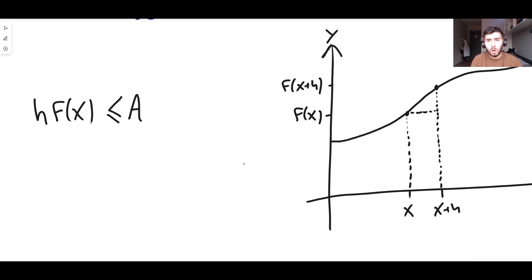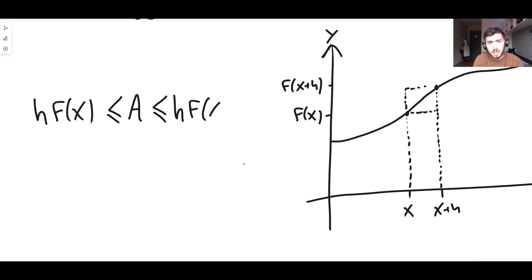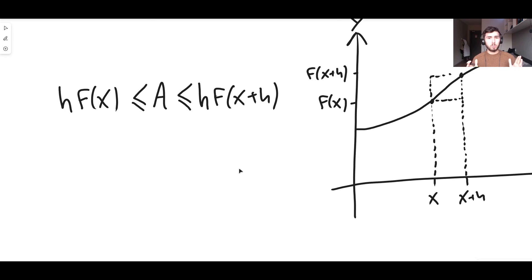Now our overestimate — the larger rectangle — must be bigger than the true area A. So A must be less than or equal to the area of this rectangle. This rectangle also has a width of h, and the height corresponds to f of x plus h. So gathering what we've done: the true exact value of the area underneath this curve is somewhere between h times f of x and h times f of x plus h. This goes for any arbitrary point underneath the curve.